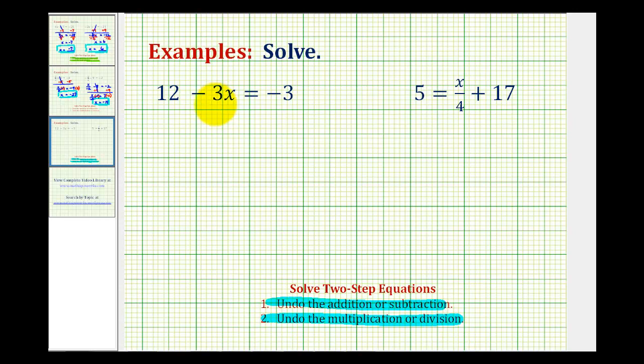So looking at this first equation, notice how the variable is on the left side of the equation, which means our goal is to manipulate this equation so it's in the form of x equals some number. So looking at the left side of the equation, we need to think which of these can we undo by adding or subtracting?